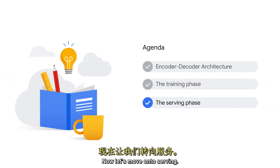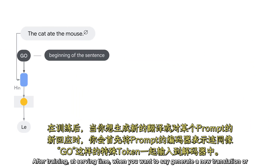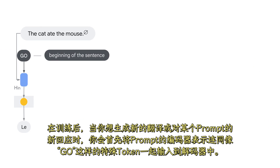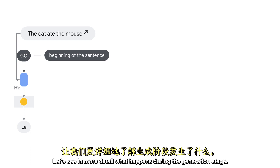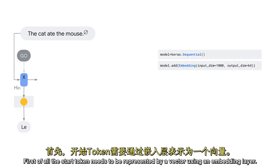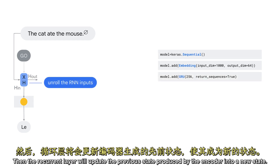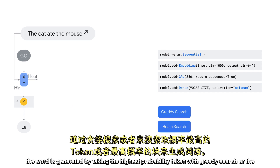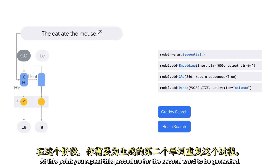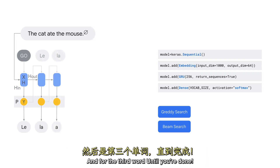Now let's move on to serving. After training, at serving time, when you want to generate a new translation or a new response to a prompt, you'll start by feeding the encoder representation of the prompt to the decoder along with a special token like 'go.' This will prompt the decoder to generate the first word. First of all, the start token needs to be represented by a vector using an embedding layer. Then the recurrent layer will update the previous state produced by the encoder into a new state. This state will be passed to a softmax layer to produce the word probabilities. Finally, the word is generated by taking the highest probability word with greedy search or the highest probability chunk with beam search. At this point, you'll repeat this procedure for the second word to be generated, and for the third one, until you are done.